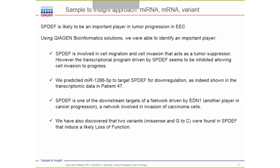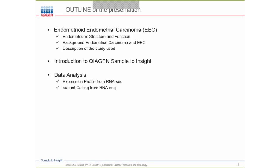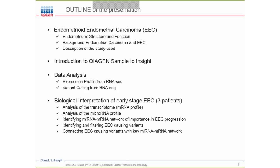We found that SPDEF is one of the downstream targets of a major network driven by endothelin-1 (EDN1), which is an important player in cancer progression. That causal network is involved in invasion of carcinoma cells. Additionally, we discovered two variants — a missense replacing G to C — found in the last exon of SPDEF, and that variant was able to induce a likely loss of function. These findings come from three patients at the early stage of EEC.